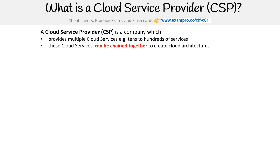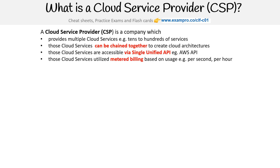Those cloud services can be chained together to create cloud architectures. Those cloud services are accessible via a single unified API — in AWS's case, that is the AWS API. From that you can access the CLI, the SDK, and the management console. Those cloud services utilize metered billing based on usage, which could be per second, per hour, VPC use, memory storage, things like that.